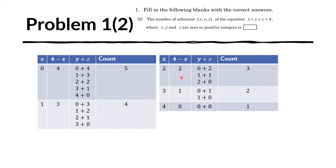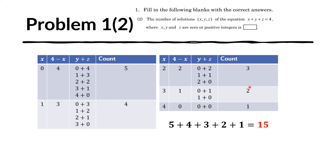We do the same process for when x equals 3, for which we get 2 combinations. And finally for x equals 4, y plus z can only be 0, so we get 0 plus 0 — which is just 1 combination. We add them all together: 5 plus 4 plus 3 plus 2 plus 1, and we obtain 15 possible solutions.